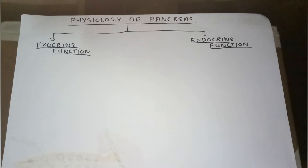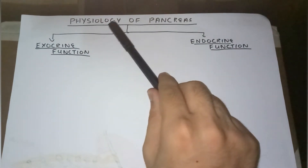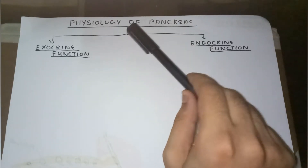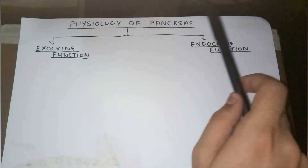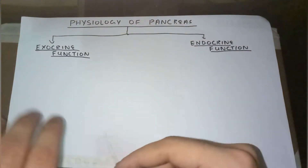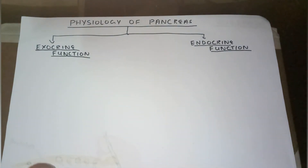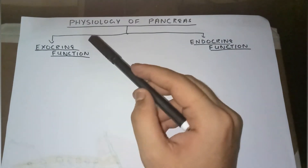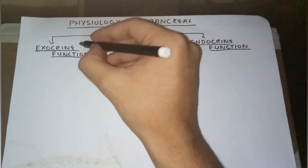The physiology of pancreas means the normal function of pancreas in the body. The pancreas performs two types of function in the body: the exocrine function and the endocrine function.